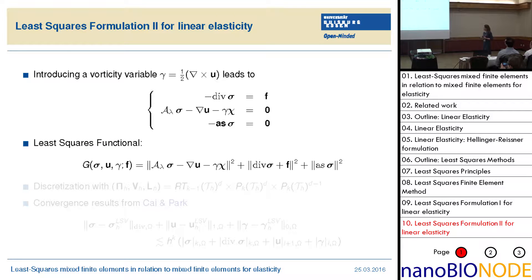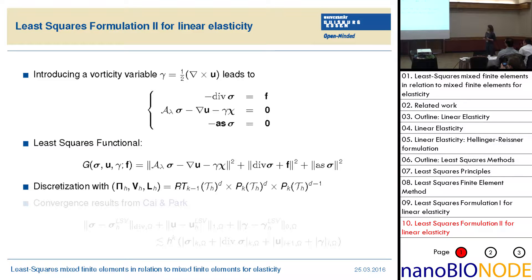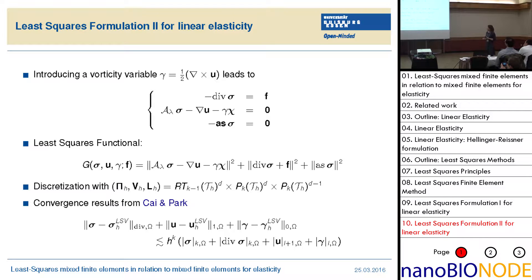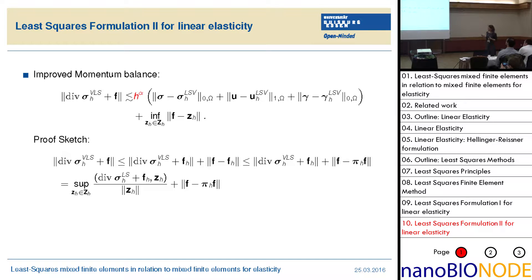So the least squares functional is again the residuals in the L2 norm. You can discretize with continuous polynomials of the same order, and then you get some additional polynomials of degree d minus one for the last equation. Ellipticity and continuity from the least squares functional was proved by Carrier and Park. And in that case you also get the improved momentum balance — we call this H to the power of alpha, the convergence order that you get from the mixed method.